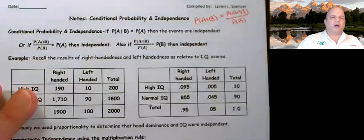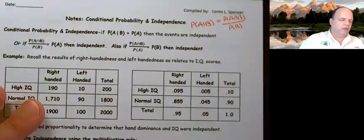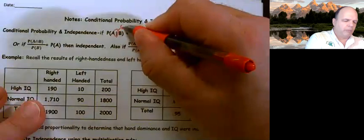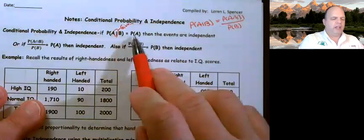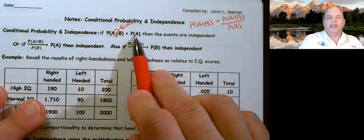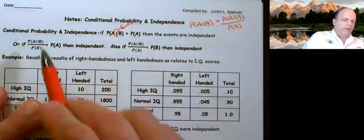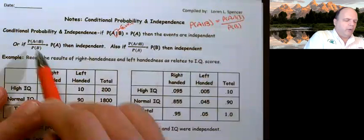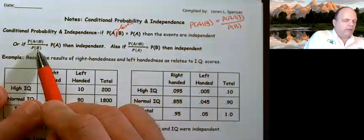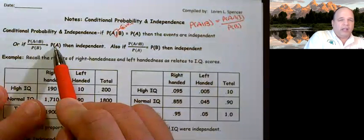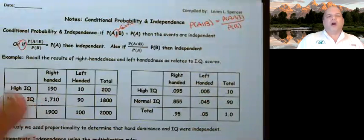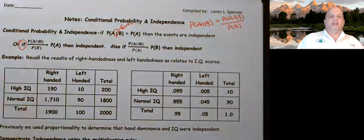Now we're going to work on conditional probability and determining independence. If the probability of A given B equals the probability of A — and please don't forget this line means 'given' — then they are independent. Remember, A given B always equals the intersection over B. So if the intersection over B equals A, then they are independent. This is a big 'if,' not an always.